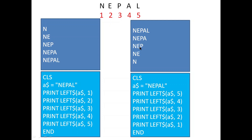We are going to print these patterns using the string NEPAL. In the first one we are printing N, then NE, then NEP, then NEPA, then NEPAL. As you can see, N is the left extreme character — the left hand side character — and it is repeated in every row. So we are printing the pattern from the left hand side, which means we can use the left dollar function.